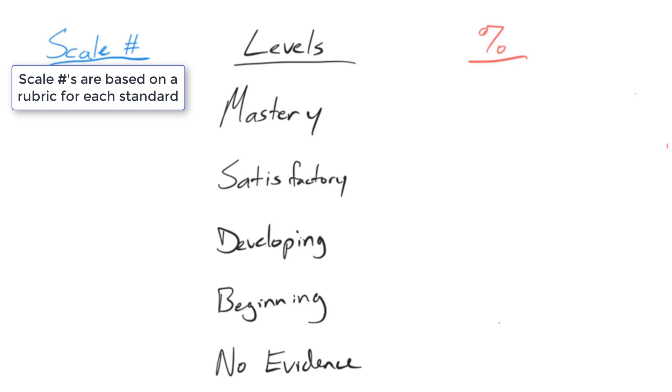So the scale numbers, I'm a 0 to 4 scale. For no evidence, that's 0. I see nothing. Beginning, I'll give a 1. Developing is a 2. Satisfactory is a 3. And mastery is a 4. Those are the basic scale numbers there. And this is what students will see on quizzes and exams.